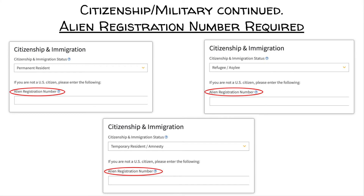If you are not a U.S. citizen, please listen to the following options. If you are a U.S. permanent resident or hold a visa (not F-1 or F-2 visa), or undocumented/out of status, you can still complete and submit the online application. You may be required to submit additional information, and the Admissions and Records Office will contact you if additional documents are necessary. If you are a permanent resident, temporary resident/under amnesty, a refugee, or an asylee, please select the option that best applies to you and include the alien registration number, then move on to the military question.